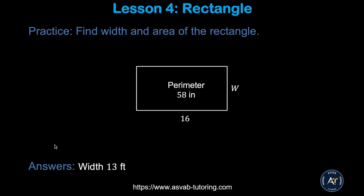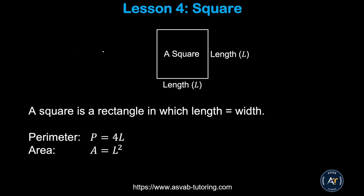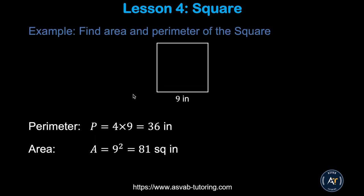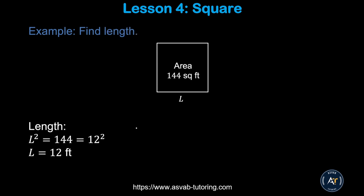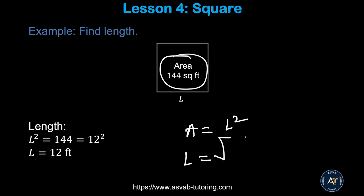Now we'll learn how to find area and perimeter of a square. A square is a four-sided shape where all sides are the same, so length and width are equal. The perimeter of a square is 4L and the area equals L squared. Here a square has one side equal to 9, so the perimeter is 9 times 4 equals 36, and the area is 9 squared equals 81 square inches. If the area is given as 144, then L equals the square root of the area.